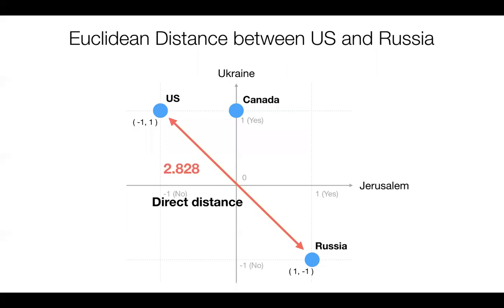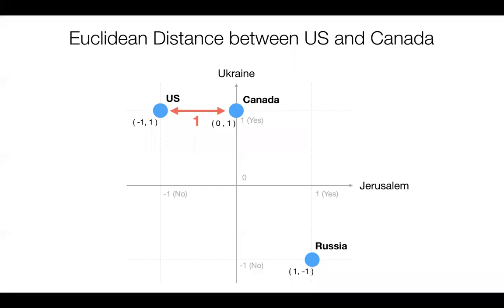Once we have that, it's very simple — the Euclidean distance is really a direct straight-line distance. The distance between US and Russia is just drawing a straight line between them. Canada and Russia in the same way — it's just a direct straight line. That's the Euclidean distance in a nutshell.